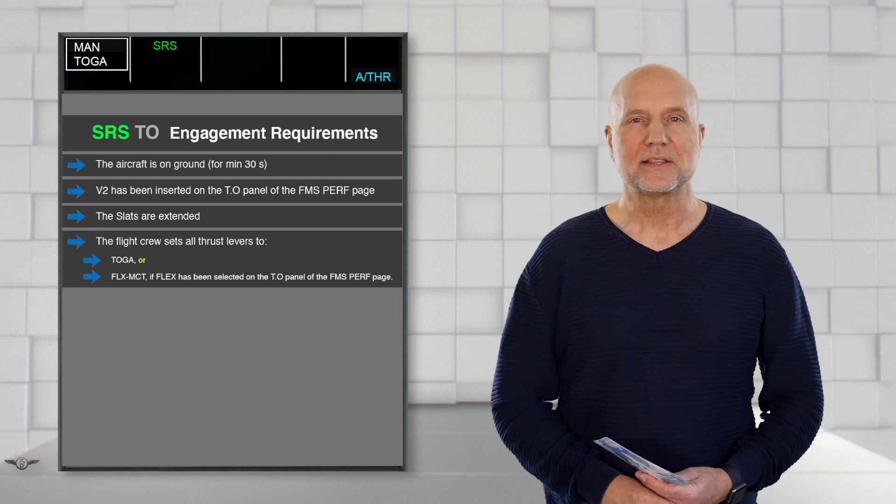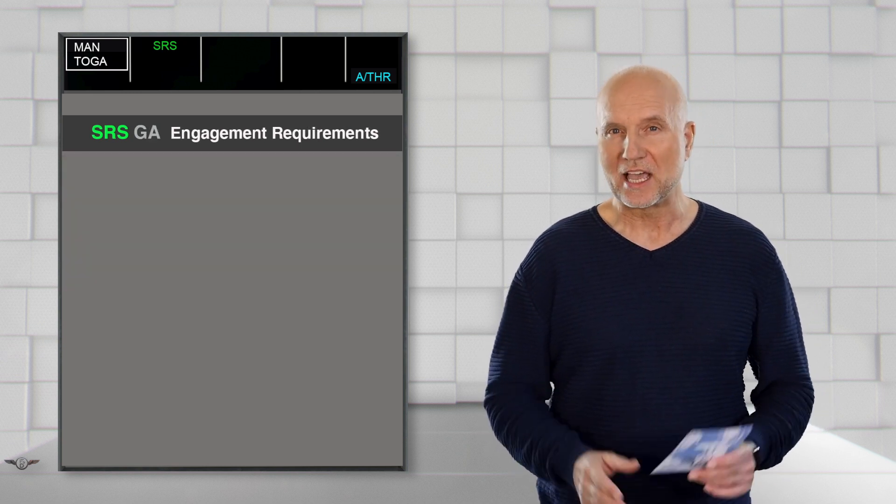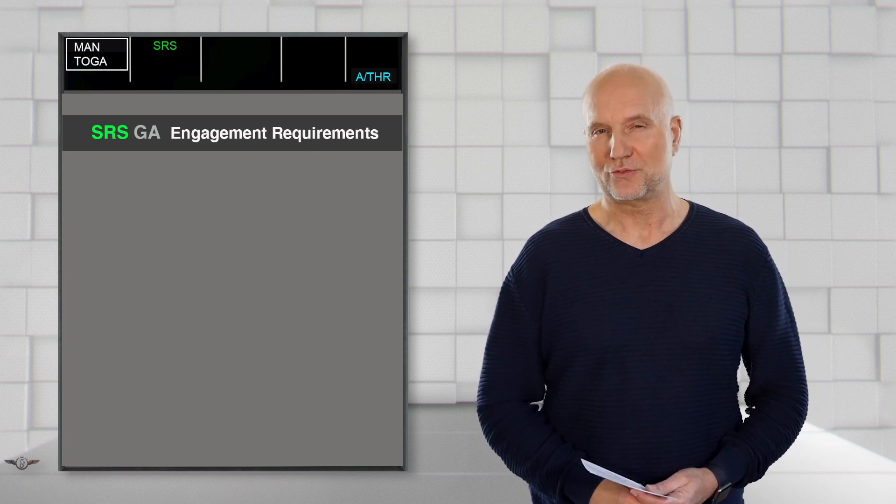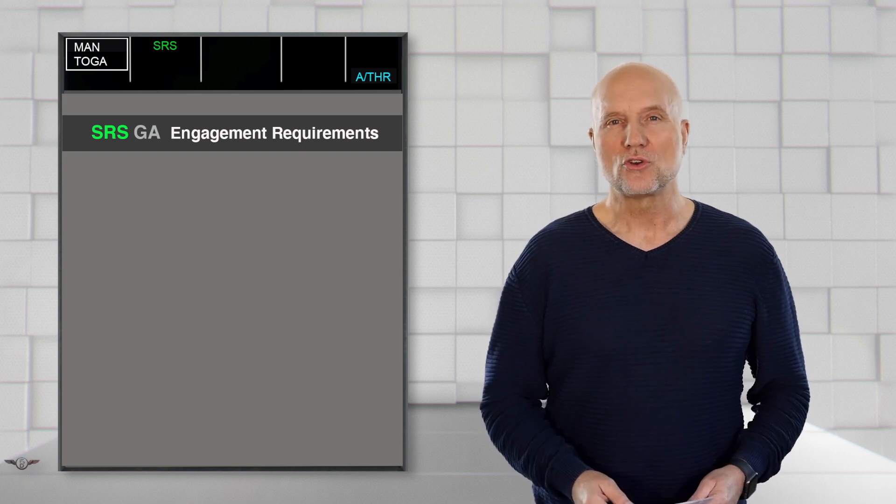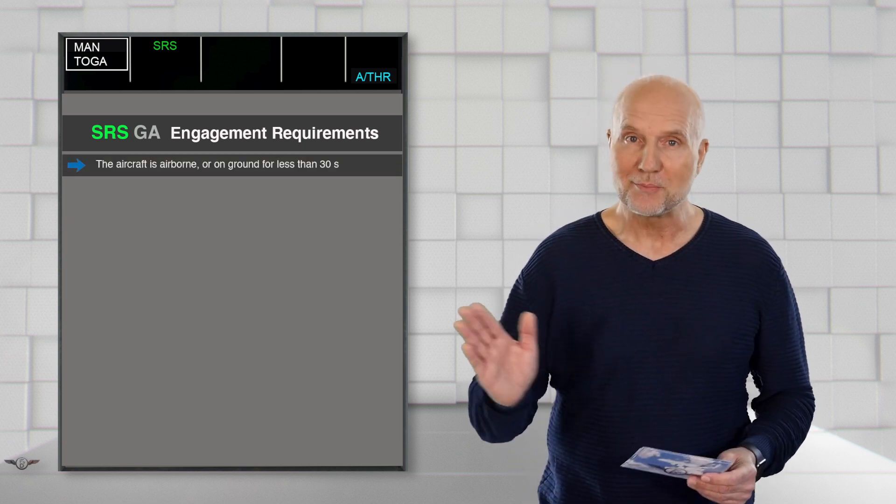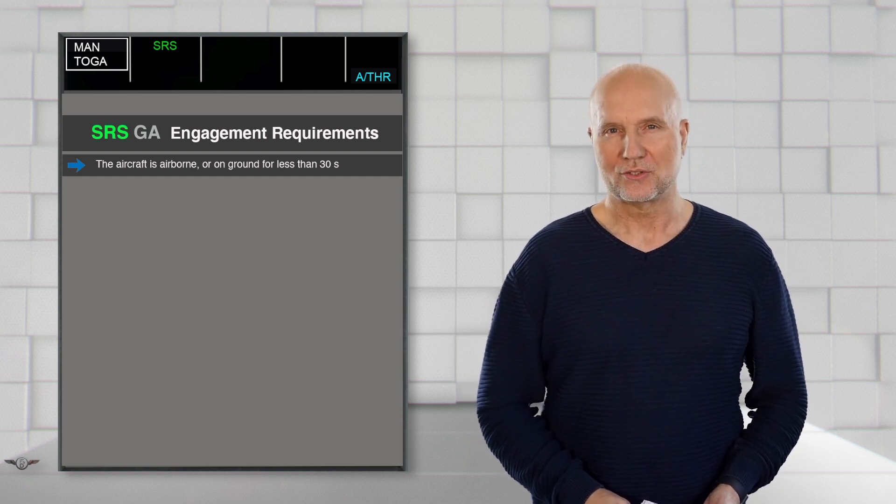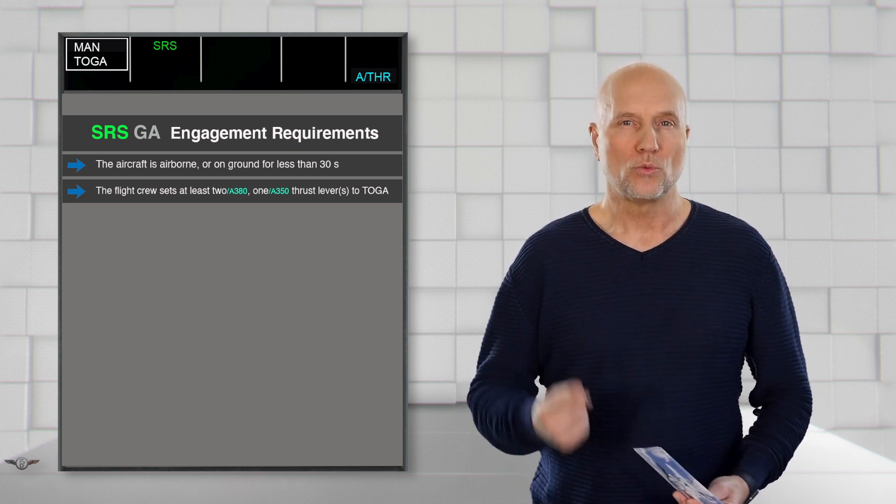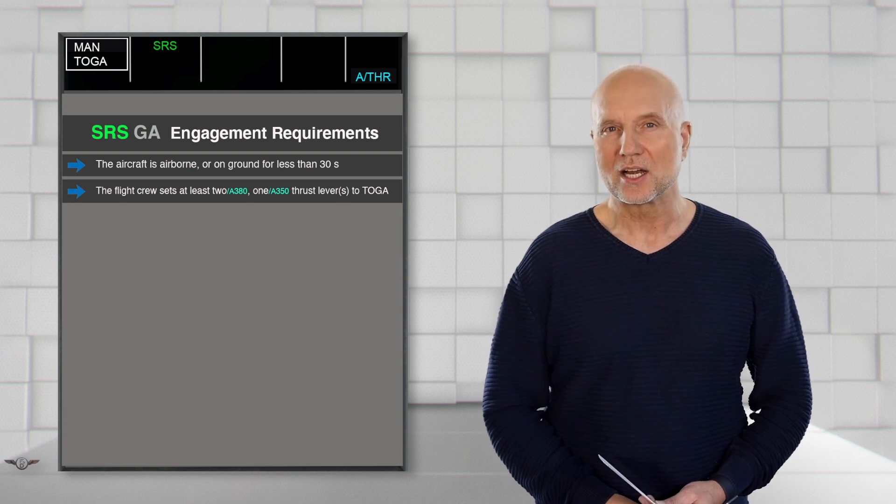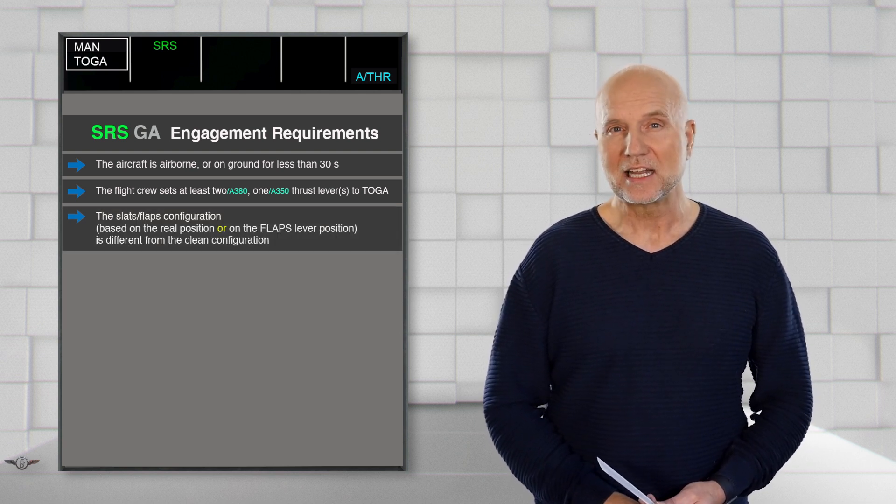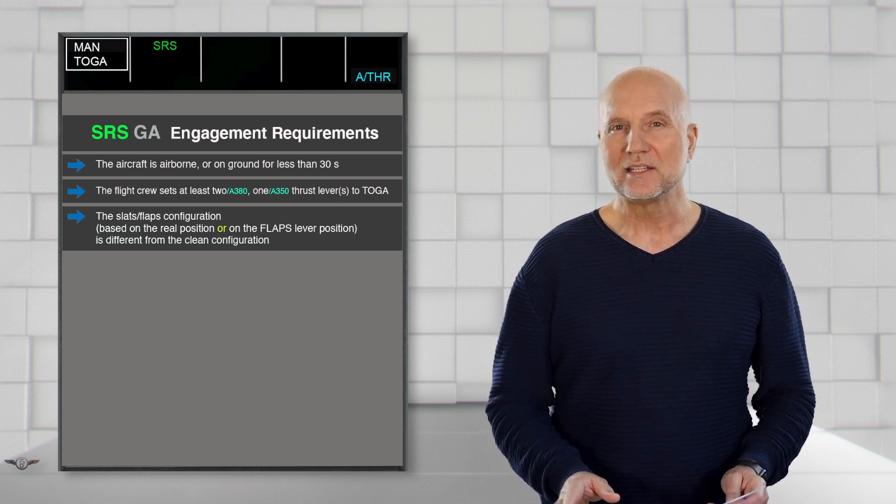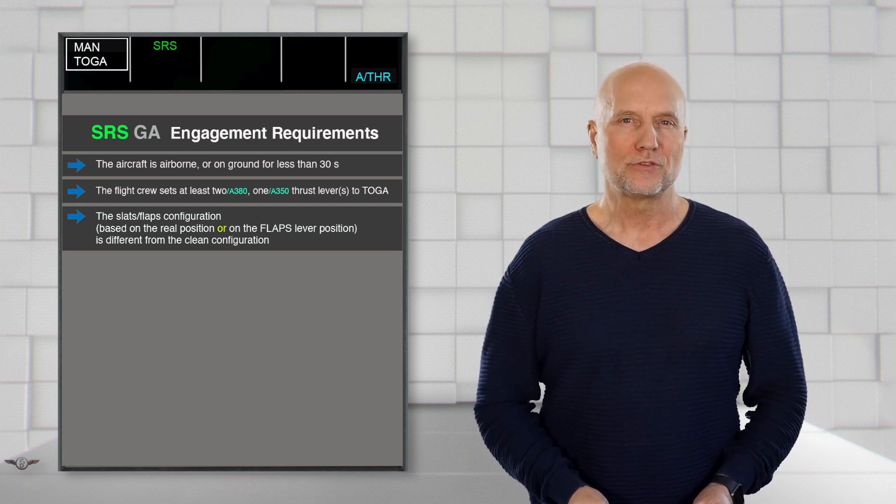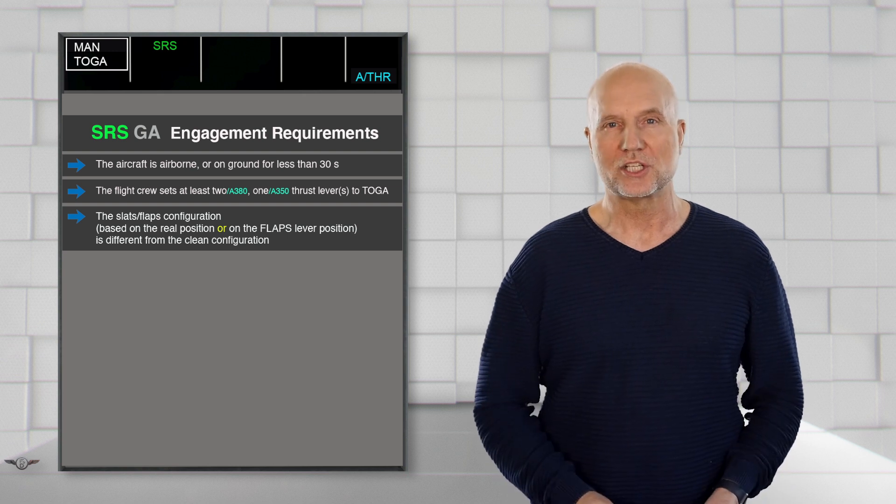Now let's look at the differences to SRS go-around. Even if the FMA looks the same in terms of the green SRS indication, some requirements are different. To engage SRS go-around, the aircraft has to be airborne or with less than 30 seconds on the ground. For the A380, at least two thrust levers; for the A350, one thrust lever has to be set to TOGA to initialize the go-around process. And the slats-flaps configuration, I'm talking about either the actual slats-flaps position or the flaps lever position, has to be different from fully retracted, and the flaps lever position is not at zero.